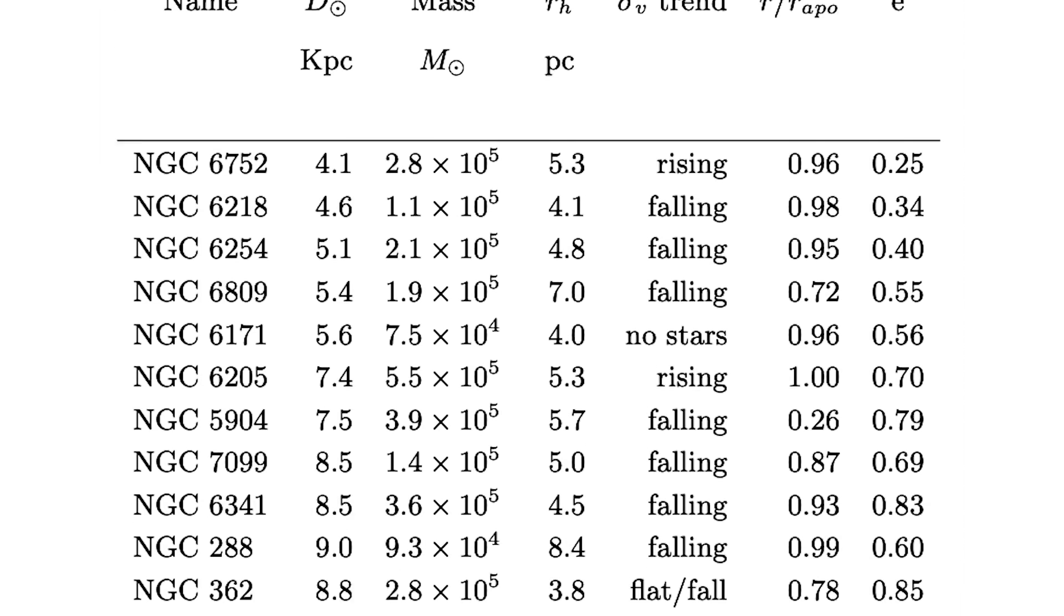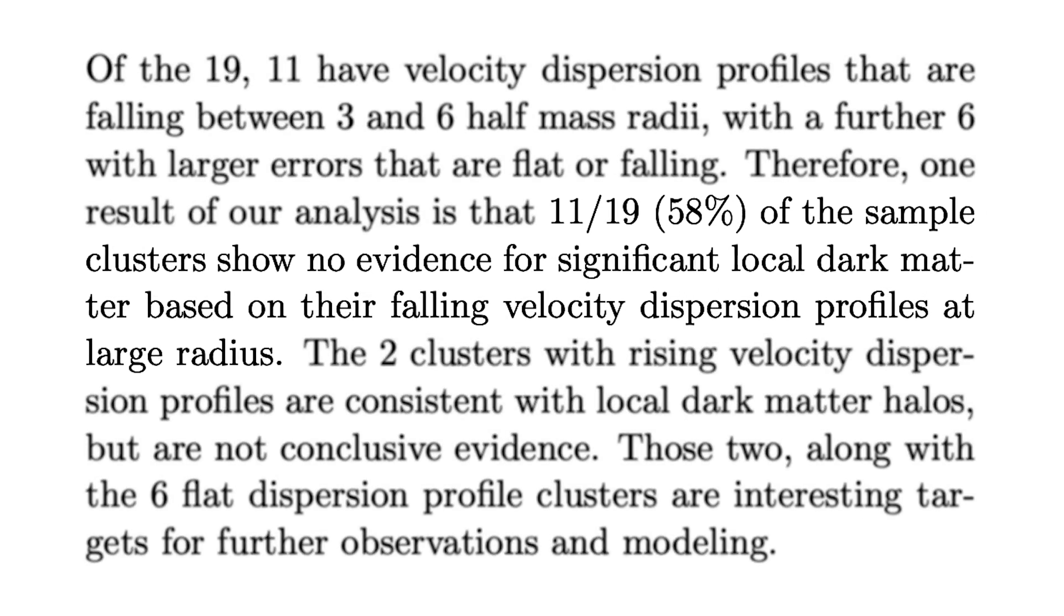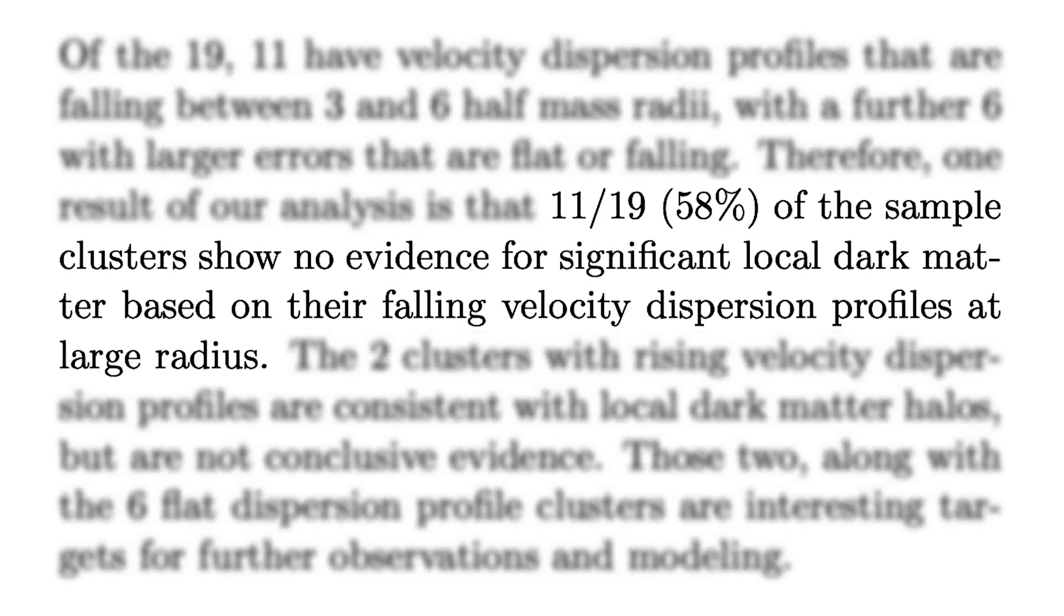They looked at 25 globular clusters in total. Eleven were consistent with just a galactic dark matter halo background. There were six globular clusters with flat velocity profiles, which were consistent with a dark matter sub-halo, but then there were two with definitely increasing stellar velocities.